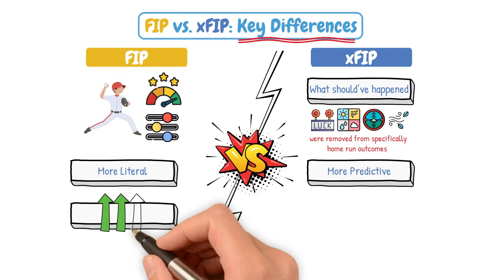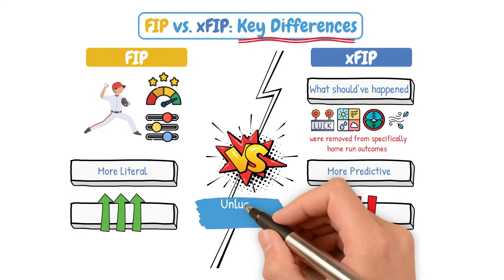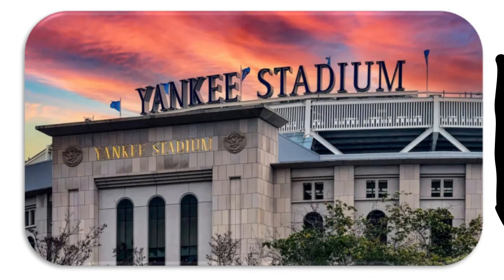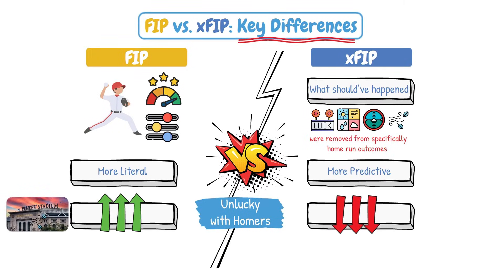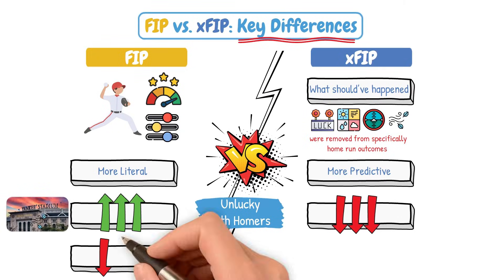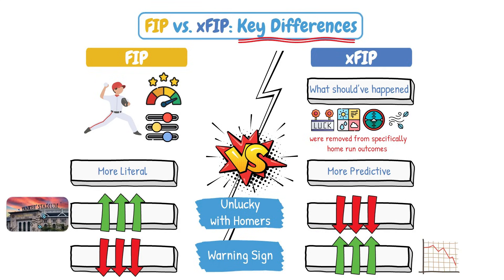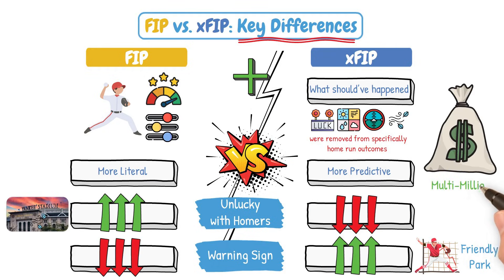If a pitcher's FIP is high but their XFIP is low, that usually means they've been unlucky with homers — maybe they've given up a few to the short porch in Yankee Stadium or dealt with more days with the wind blowing out. If it's the opposite — low FIP with a high XFIP — it could be a warning that regression may be coming because they're pitching in a more pitcher-friendly ballpark. All of this adds up when making multi-million dollar decisions on who to sign or trade for.